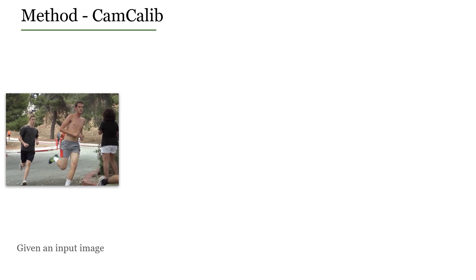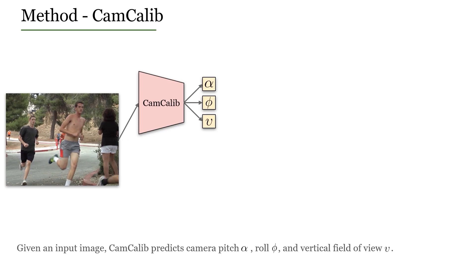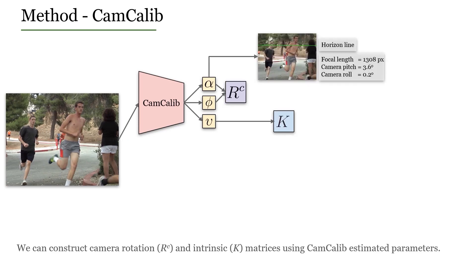Given a single input image, CAM-CALIB predicts the camera pitch, roll, and vertical field of view. We construct camera rotation and intrinsic matrices using these estimated parameters.